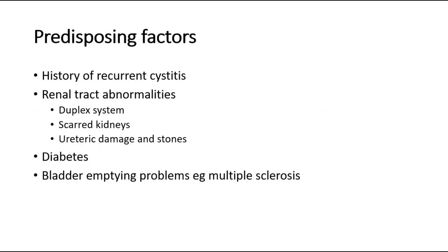These are some predisposing factors to UTI in pregnancy. If the mother has a history of recurrent cystitis, renal tract abnormalities such as duplex system, scarred kidneys, damage to the ureter or ureteric stones. If the mother has diabetes mellitus, it is a risk factor for UTI as well. And also bladder emptying problems such as multiple sclerosis.